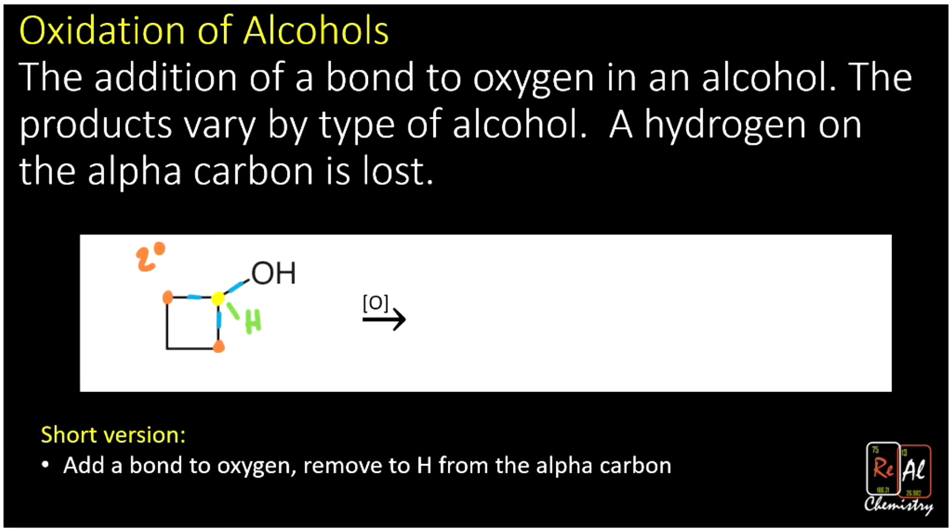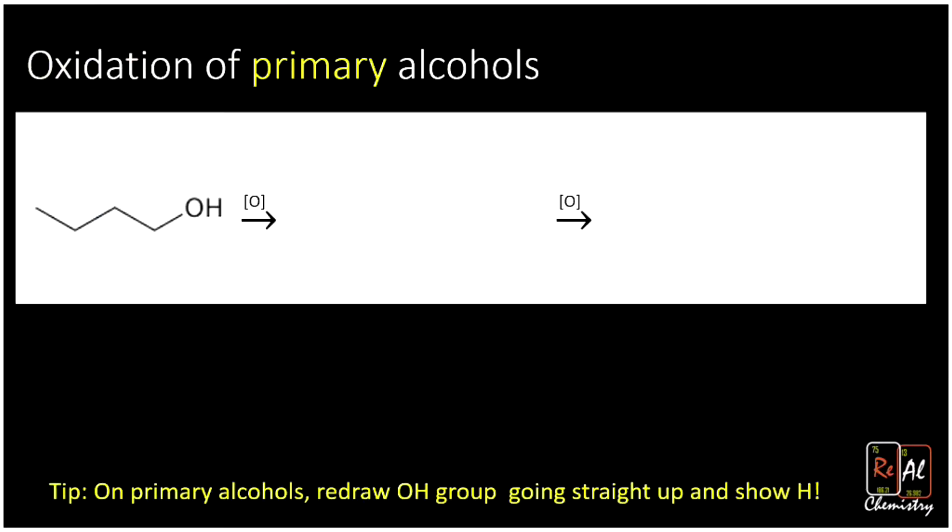But let's start with primary alcohols. Primary alcohols have just one carbon connected to their alpha carbon. So if we think about categorizing this guy, we'll notice that it has the alpha carbon here. And then we have just one carbon connected to that. So that's a primary alcohol.